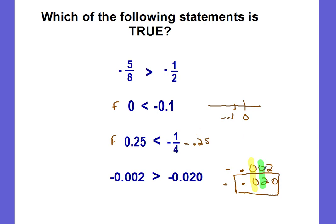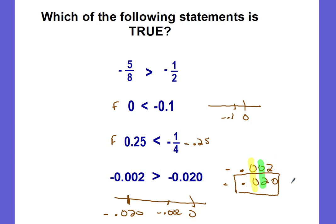— but remember these are negatives, so it's the other way around. The larger hundredths digit is actually farther to the left of zero. Negative two-thousandths is actually larger than negative twenty-thousandths, because it is closer to zero. So negative two-thousandths greater than negative two-hundredths — this statement is true.